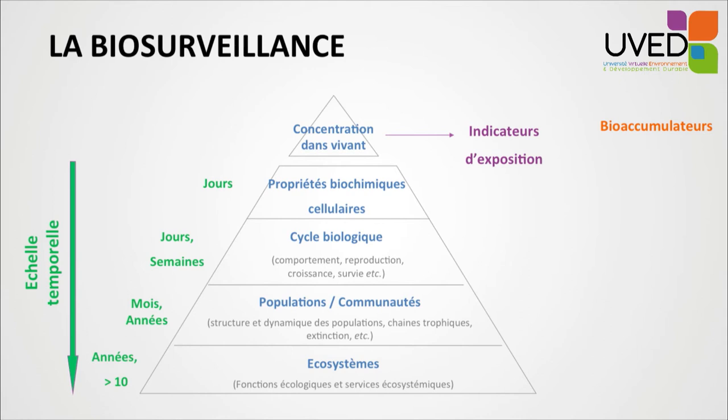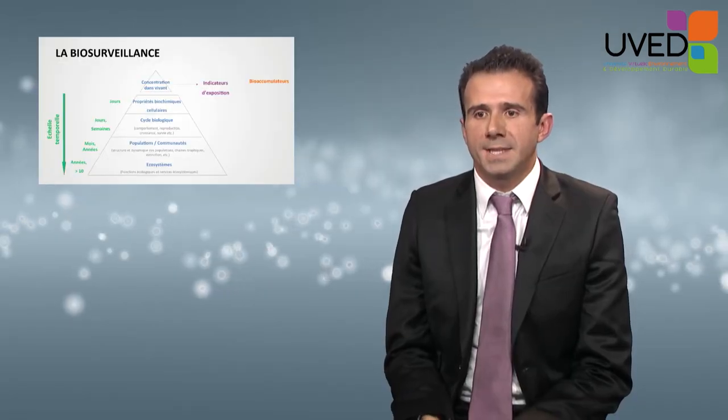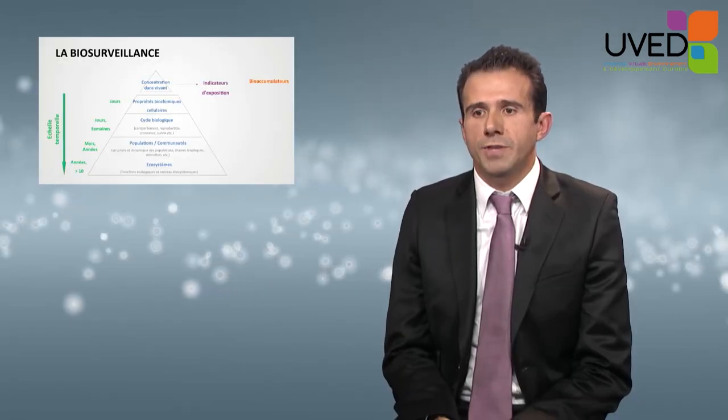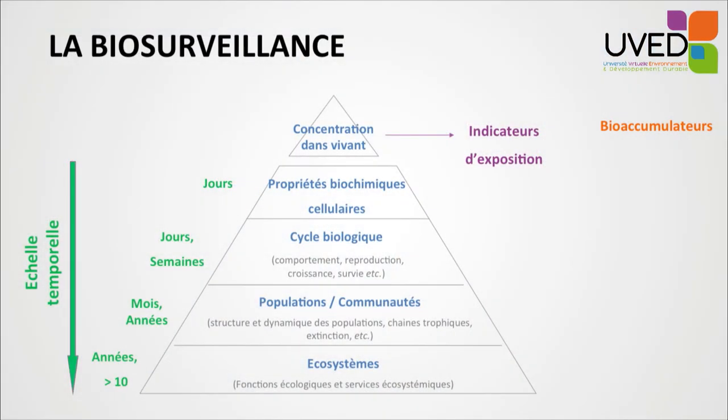We have a very good example with mussels. They filtrate water and accumulate in their tissues the polluting agents present in water. Mussels are used internationally as indicators. In France, they are used by the French research institute for sea exploitation, using mussels in surveillance networks to analyze the chemical status of water.